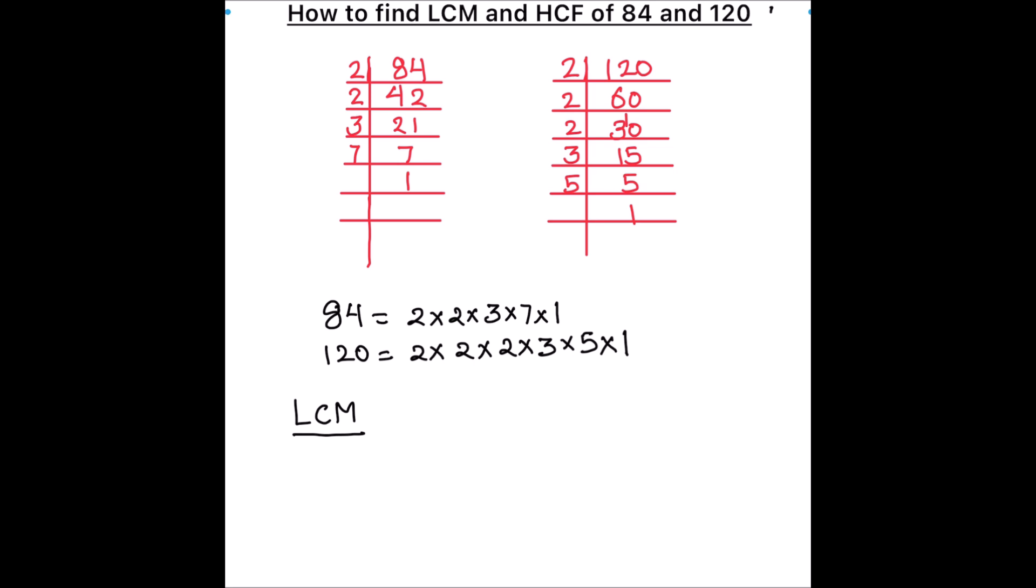First we find the LCM. For the LCM, we first find the common factors between the two numbers. Let's circle the common factors: this is one common factor, 2; the other common factor is 2 again; and then 3 is a common factor. LCM will be the product of common factors and all the other factors.